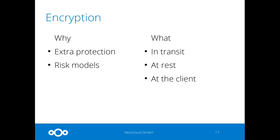So Nextcloud offers kind of three kinds of encryption. The first one, in transit, is just HTTPS, and that's set up in Apache. It protects your data from being intercepted by whoever is between you and the server. So if you're on a Wi-Fi network like here, if you don't use HTTPS, anyone in this room could just sniff the network and see the packets. If they're not encrypted, it's very easy to just track and store that data. Just enabling HTTPS with Let's Encrypt on Apache or Nginx already protects you from this threat.